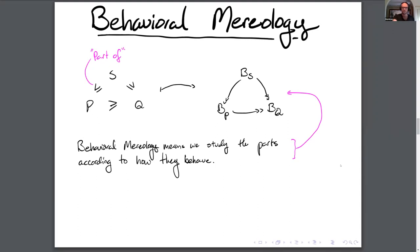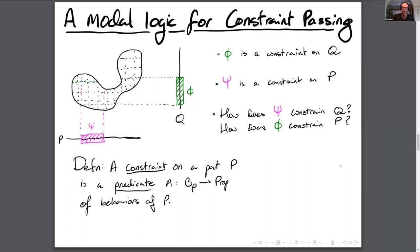Now I'll come to our modal logic for constraint passing. A constraint formally on a part is going to be a predicate on its set of behaviors — a predicate that tells us whether or not we're satisfying this constraint. So if we have a constraint phi on q and a constraint c on p, we can ask: how does c constrain q, and how does phi constrain p? They interact a little bit — there's only some part of the whole state space, that blob there in the corner, that satisfies both these constraints simultaneously. So if you know you satisfy one, you also know something about how you satisfy the other, but maybe not everything.